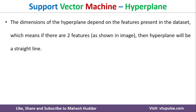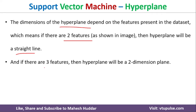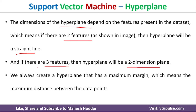The dimension of the hyperplane depends on the features in the dataset. If we have two features, x and y, the hyperplane will be a straight line. But if we have three or more features, we cannot draw a straight line — we need to draw a plane, called a two-dimensional hyperplane. The key requirement is that we draw the hyperplane to achieve the maximum margin.